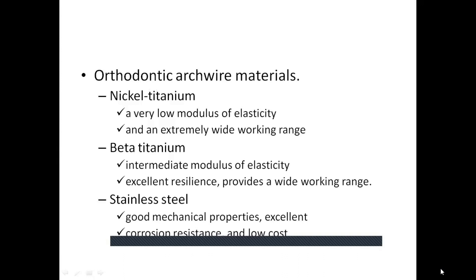Stainless steel wires remain popular due to their good mechanical properties, excellent corrosion resistance, and low cost. The typical composition is 18% chromium and 8% nickel (the 18-8 alloy). Chromium gives the wire its corrosion resistance. Compared with NiTi and beta titanium, stainless steel exhibits the highest elastic modulus and low spring back, and can be soldered and welded.